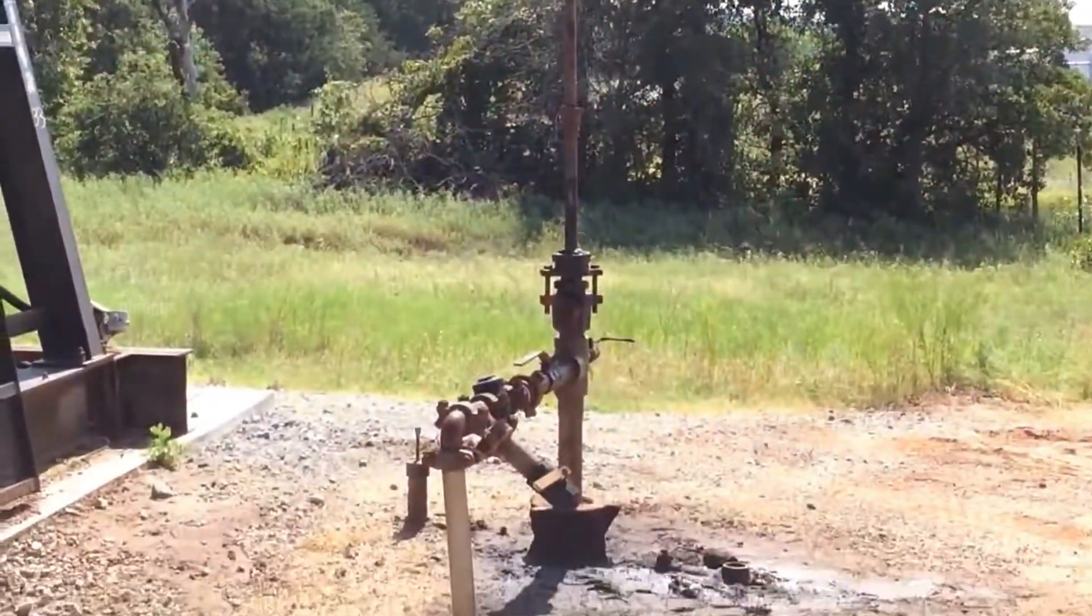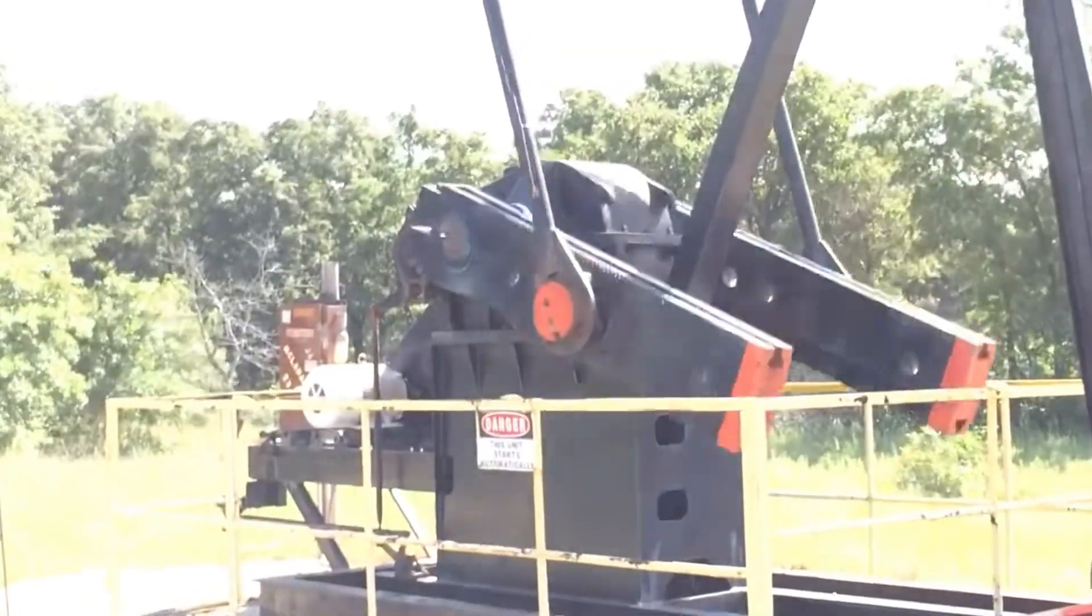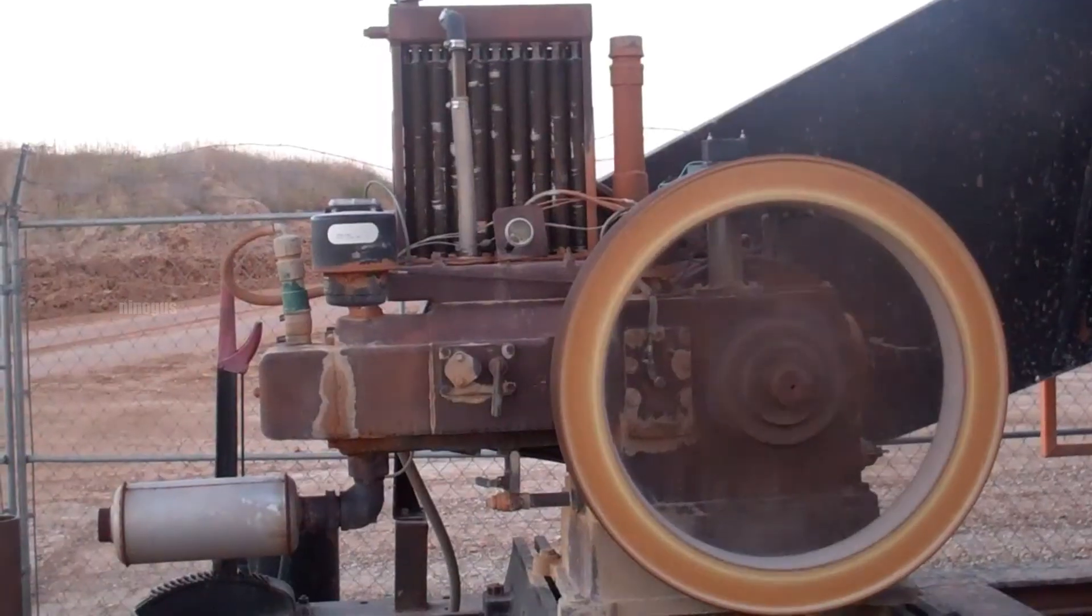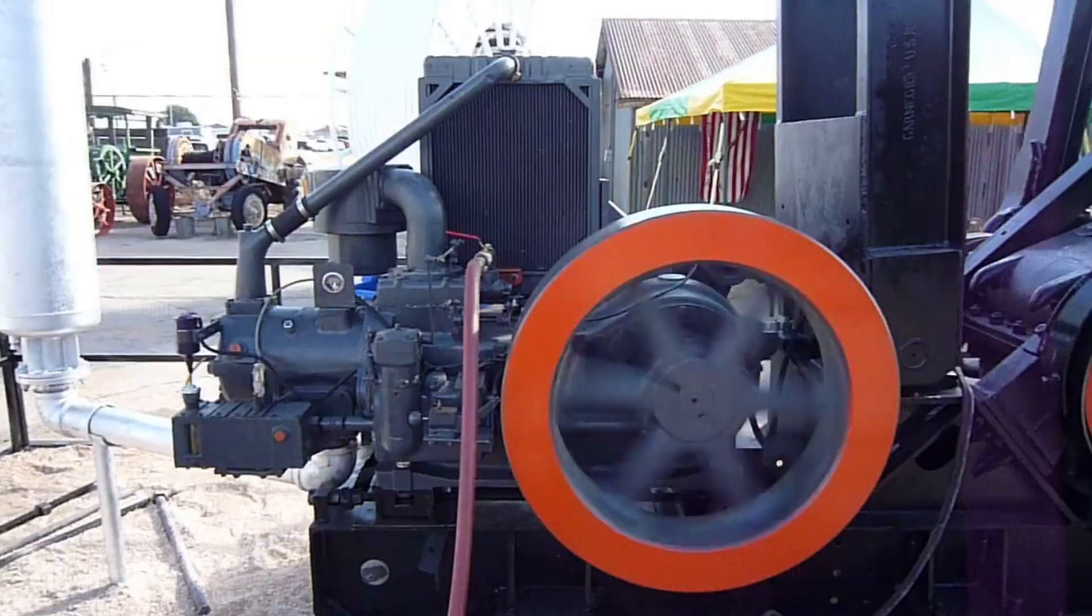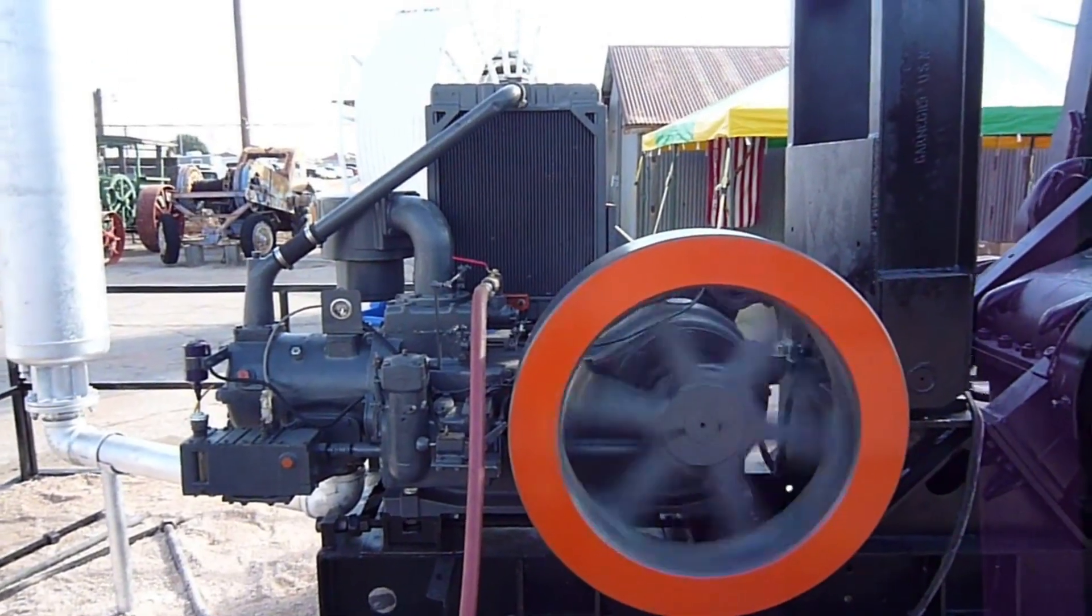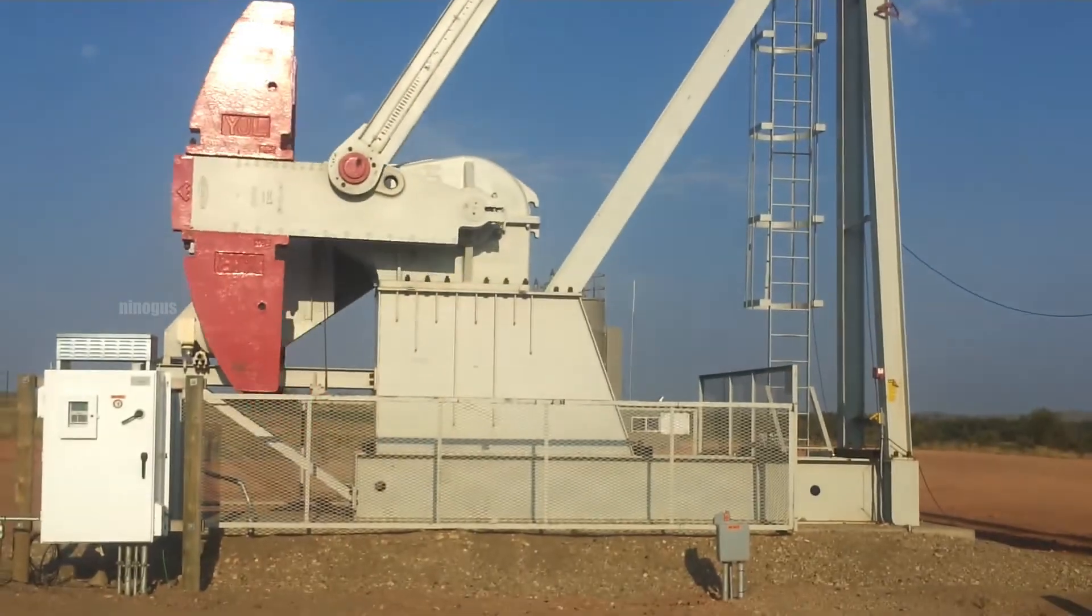The pump jack is powered by an electric motor, which serves as its main power source. This motor is connected to a gearbox, which functions to adjust the motor's rotational speed, slowing it down to suit the system's needs.